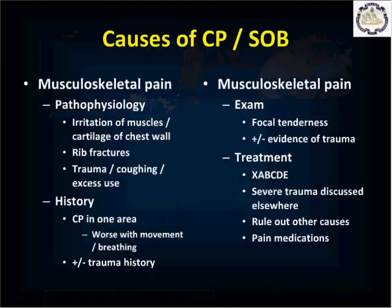There are also more common, less dangerous causes of chest pain. Musculoskeletal pain from irritation of chest wall muscles or cartilage, or isolated rib fractures, can result from trauma, coughing, or excessive use from lifting, carrying, and twisting. Typically there is chest pain in one area that is worse with movement or deep breathing, possibly with a trauma history. Exam reveals focal tenderness and possibly evidence of trauma. Treatment: XABCDE. If not severe trauma, confirm nothing else is going on through good history, discuss with medical control, and provide NSAIDs and possibly something stronger to aid sleep.